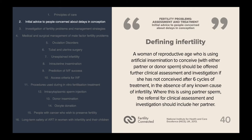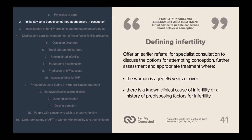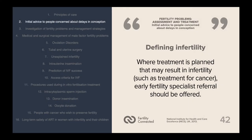A woman of reproductive age who is using artificial insemination to conceive with either partner or donor sperm should be offered further clinical assessment and investigation if she has not conceived after six cycles of treatment, in the absence of any known cause of infertility. Where partner sperm is used, the referral should include her partner. An earlier referral for specialist consultation should be offered where the woman is aged over 36 years, there is a known clinical cause of infertility, or there is a history of predisposing factors for infertility.